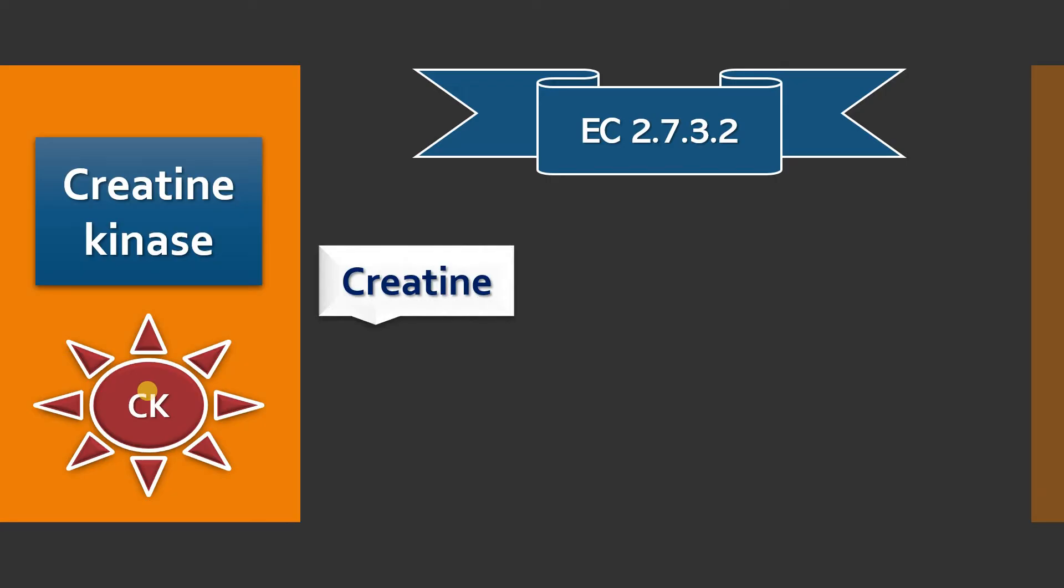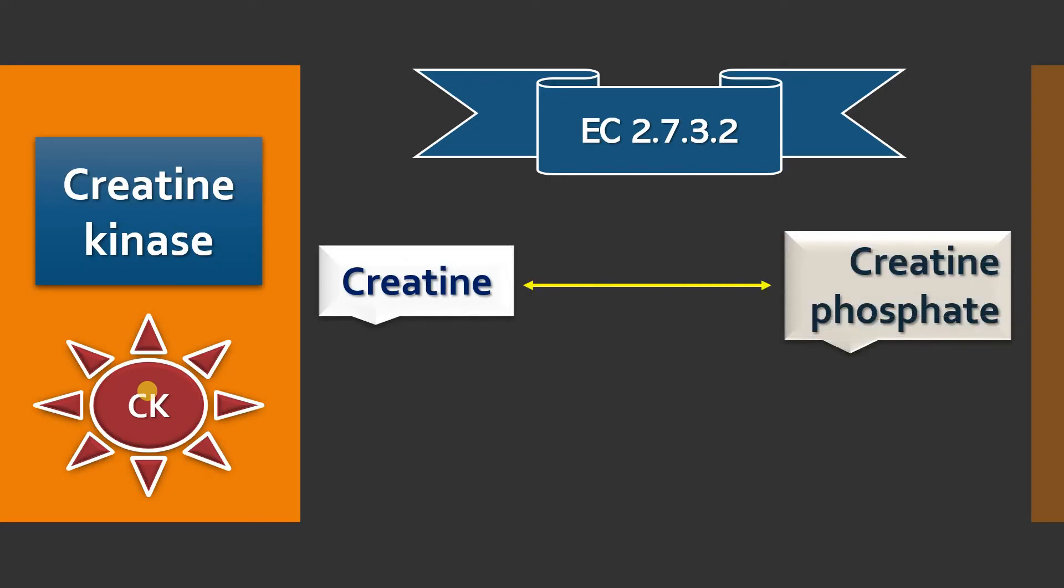This enzyme catalyzes reversible conversion of creatine to creatine phosphate. It utilizes ATP and ATP is converted to ADP and the inorganic phosphate is handed over to creatine to become creatine phosphate, a high energy compound where this high energy phosphate will be utilized for the formation of ATP back during muscle contraction.